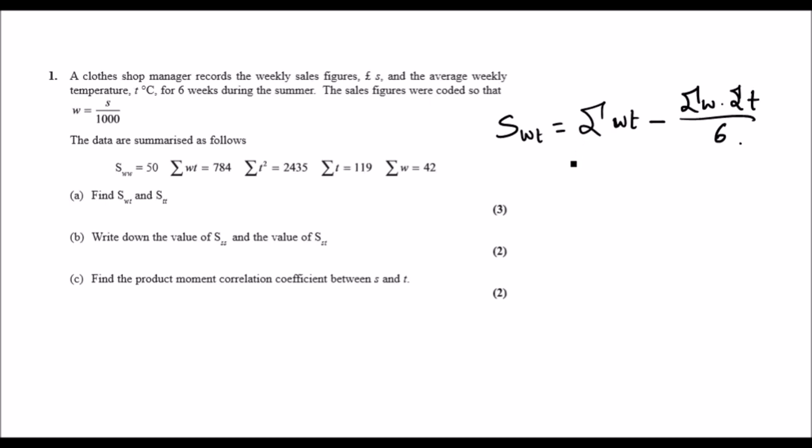You're just going to simply use this value here, this value here and this value here. So plug that into the calculator and multiply them out. So it's going to be 784 minus 42 times 119 over 6 and I got minus 49.